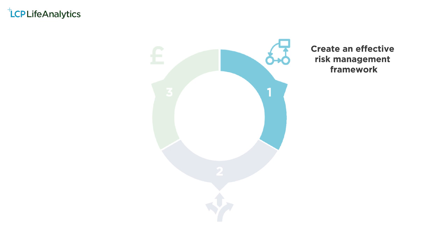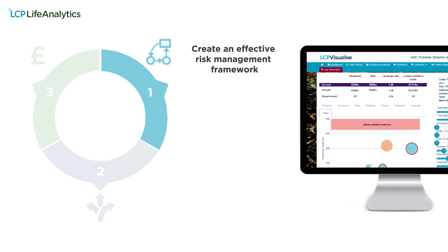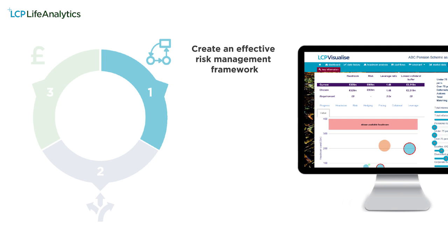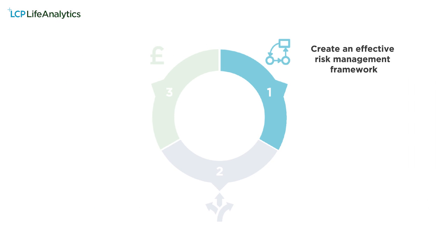LCP Life Analytics provides the missing piece and advice in three main areas. Firstly, it allows you to get a more complete picture of the risks you're running and to create an integrated framework for measuring and managing longevity alongside investment risks. LCP Life Analytics can feed directly into the risk metrics in LCP Visualize, enabling you to consider the impact on your risk and return of longevity hedging options such as buy-ins and longevity swaps. Undertaking a robust and holistic assessment of your pension scheme's risks in this way will also help you to satisfy the Pensions Regulator's latest guidance on integrated risk management.